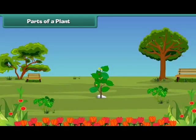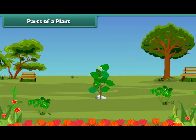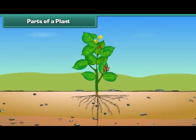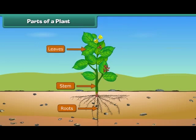Friends, let us discuss various parts of a plant. The main parts of a plant are roots, stem, leaves, flowers and fruits. Let us know them one by one in more detail.